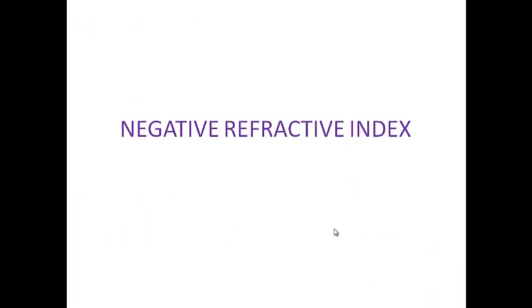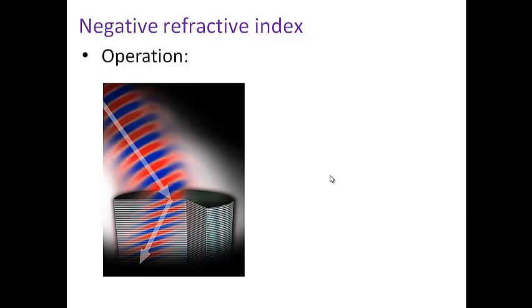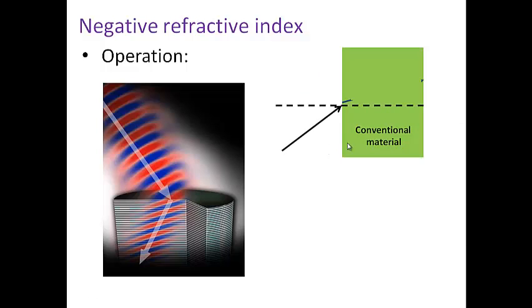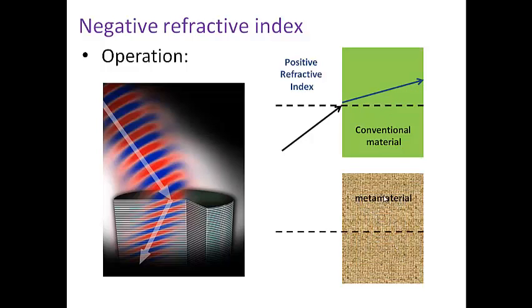The second technique is negative refractive index. In a normal conventional material, an incident wave produces a positive refractive index. However, in a metamaterial, it will produce a negative refractive index. This means the propagation inside this material will have an angle on the other side of the reference line.